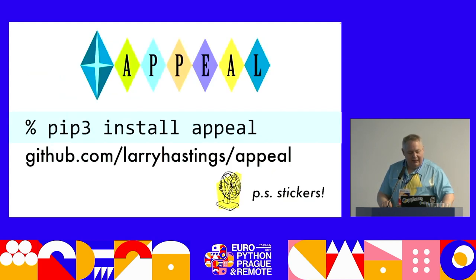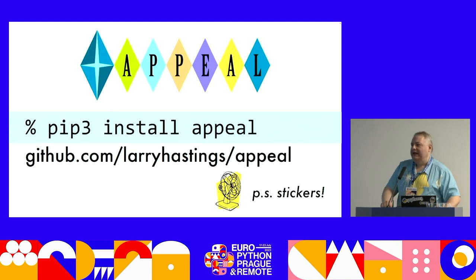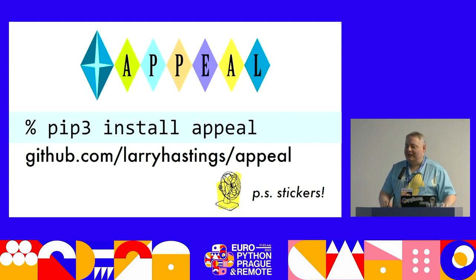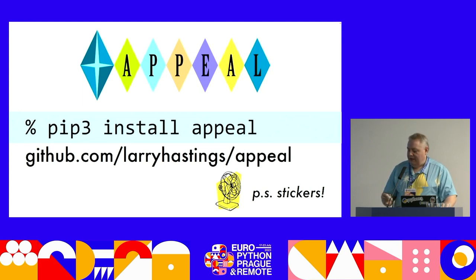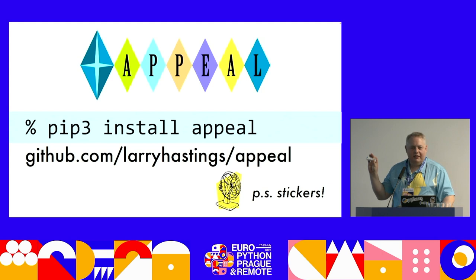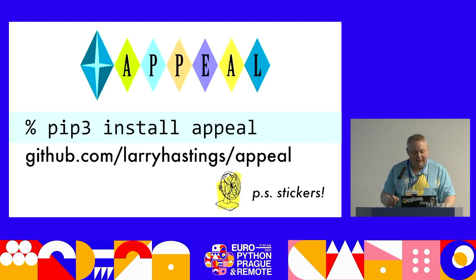You can install Appeal right now. Later today I'll ship 0.6 with config file reading support. It's on GitHub. I have stickers with cool 60s-style art, and I think I have time for questions. Thank you.